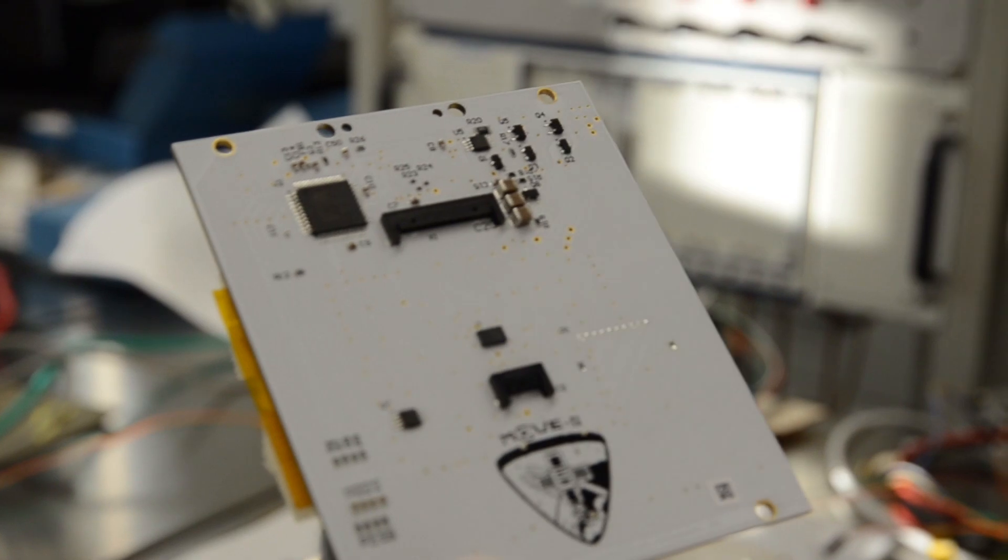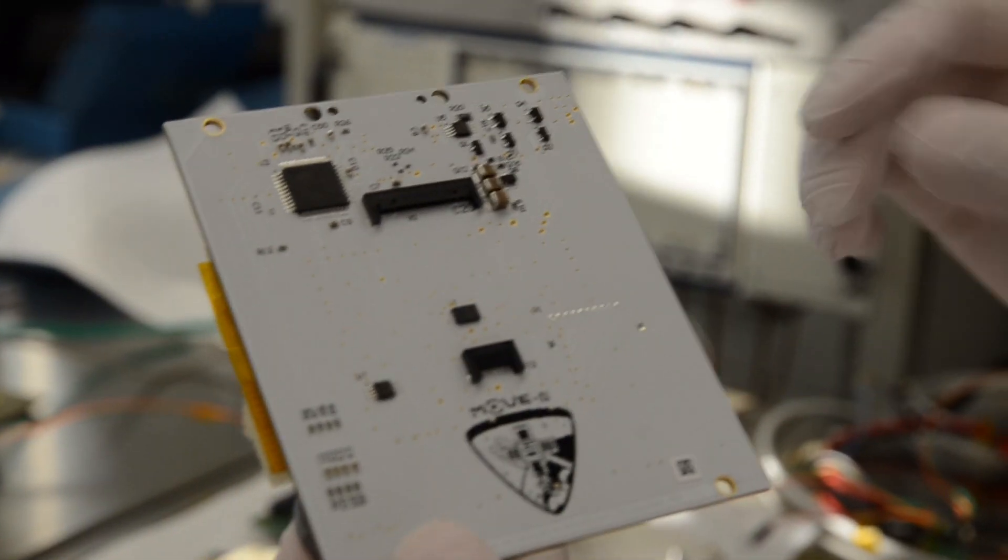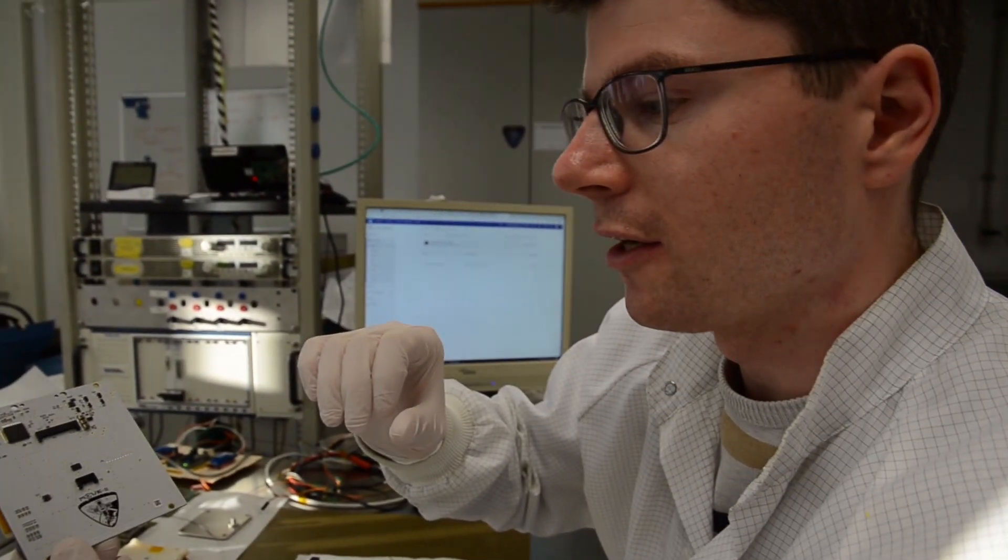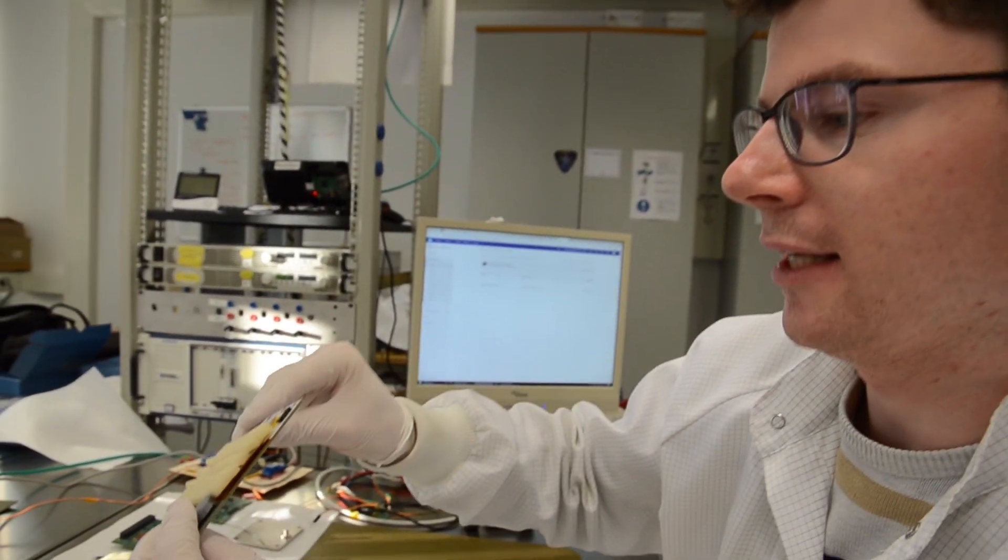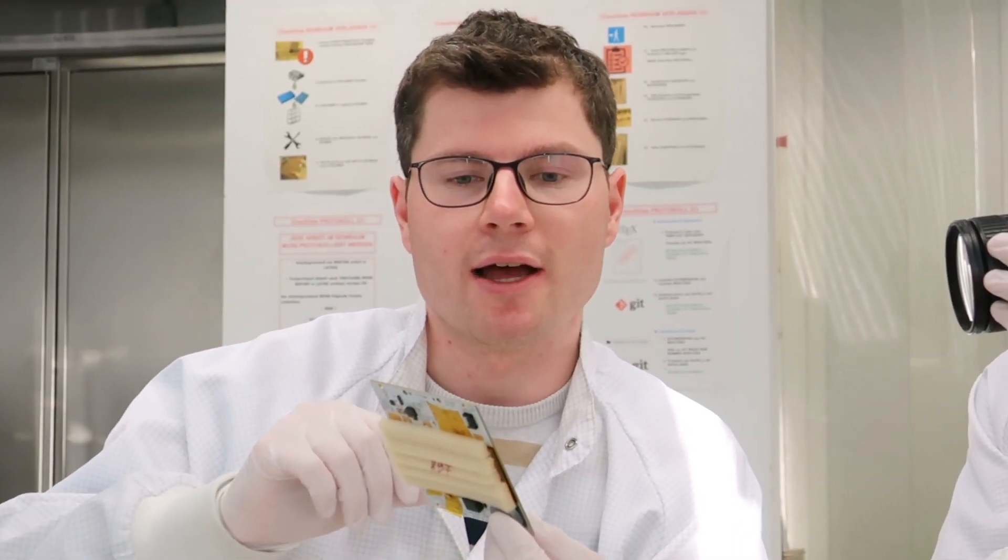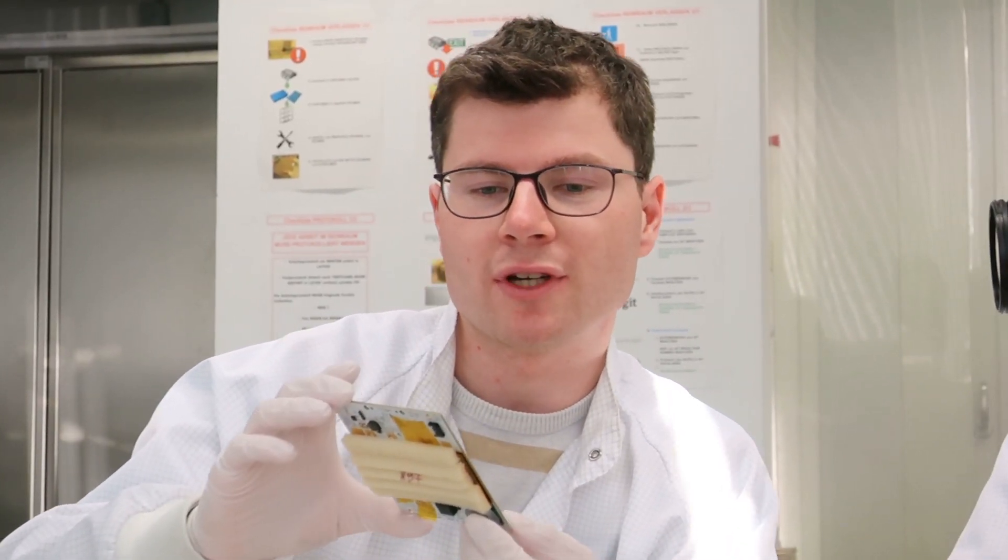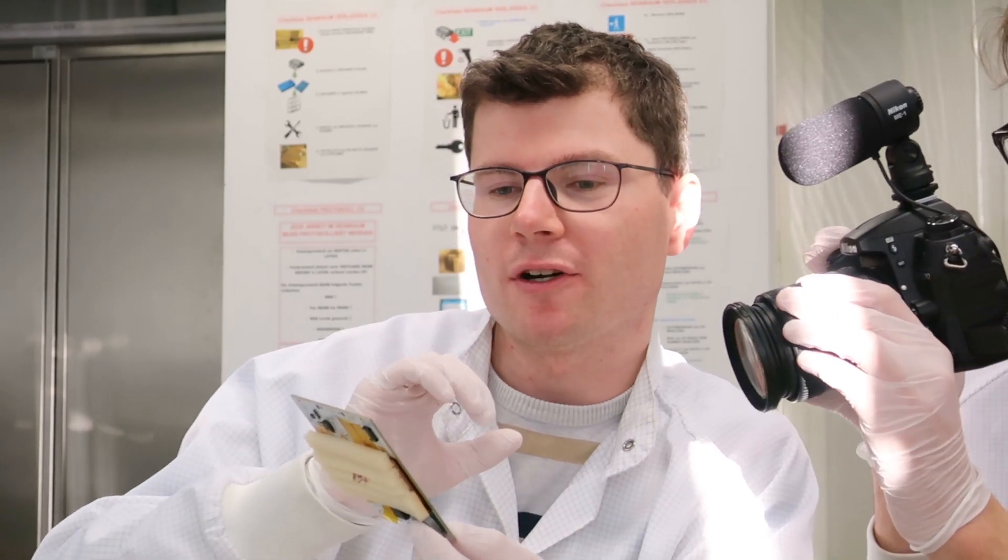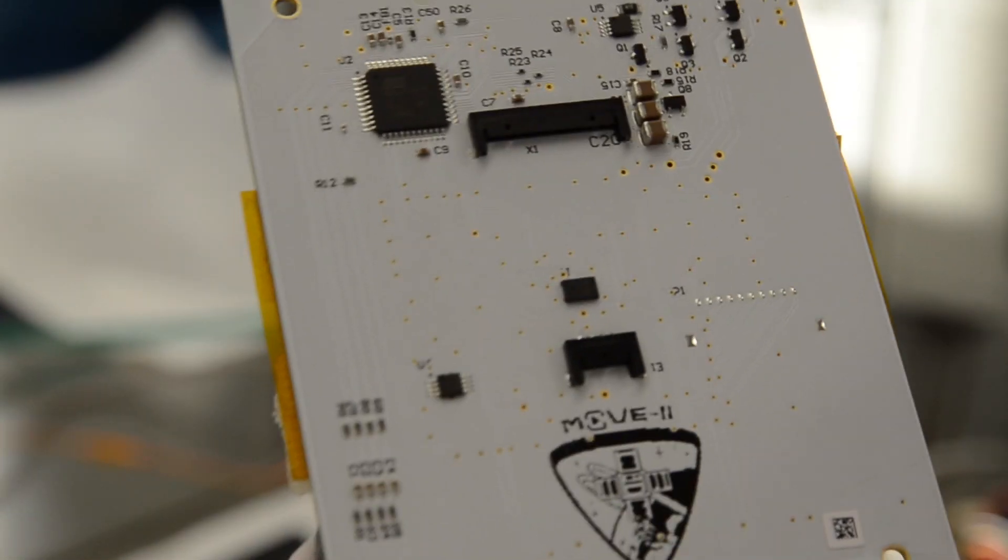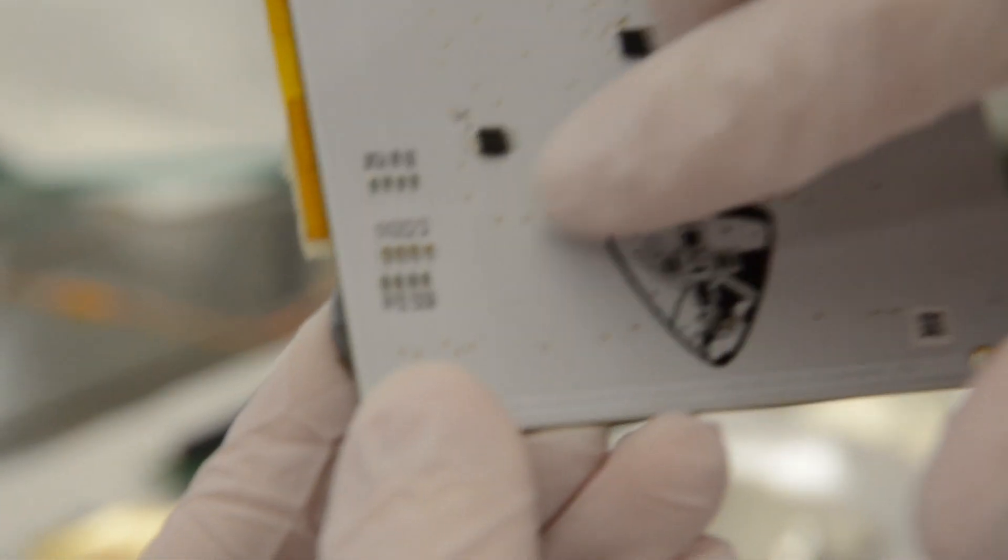The coil itself is in the inner six layers of that board. It has eight layers, six inner layers, and those six inner layers make up the coil. You can spot the coil a little bit by looking on the vias, these little holes which connect the top layer and the bottom layer to each other.